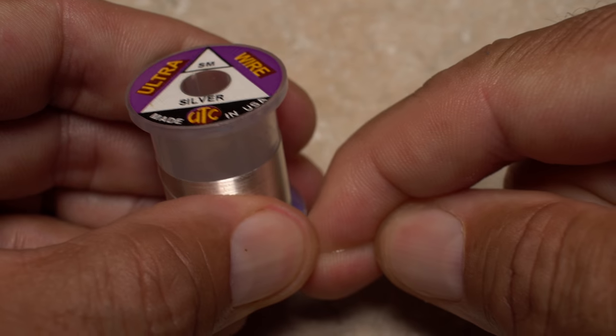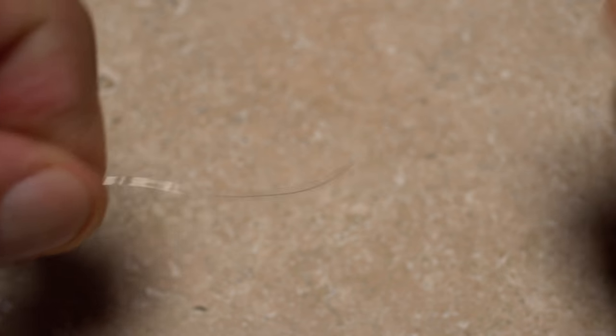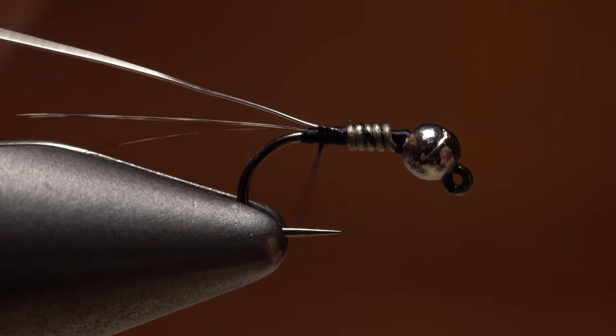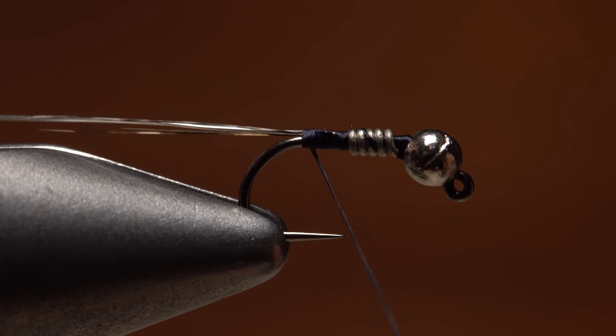Small-sized silver ultrawire is used to rib the fly. Again, an 8-inch length will make numerous flies. Butt one end up against the wire weight, and take thread wraps to secure it to the top of the hook shank and down the far side.